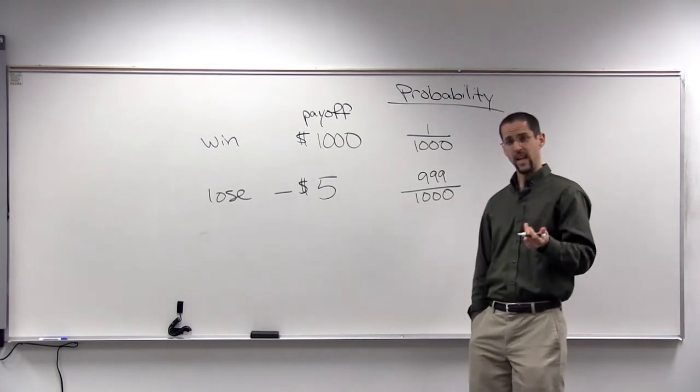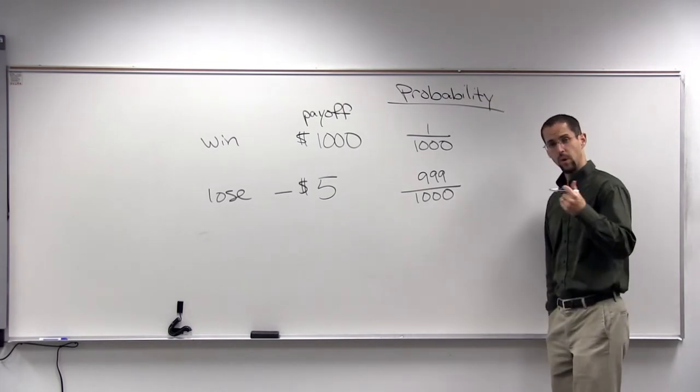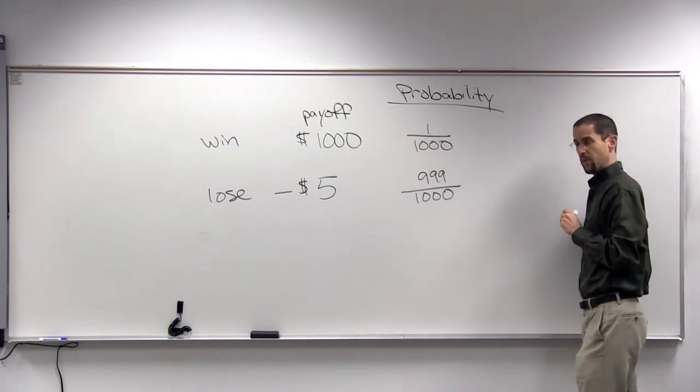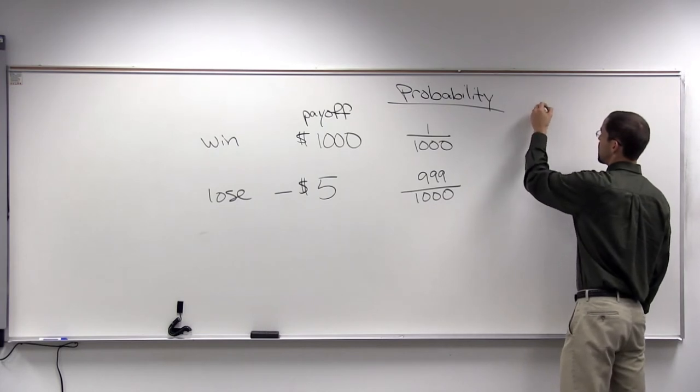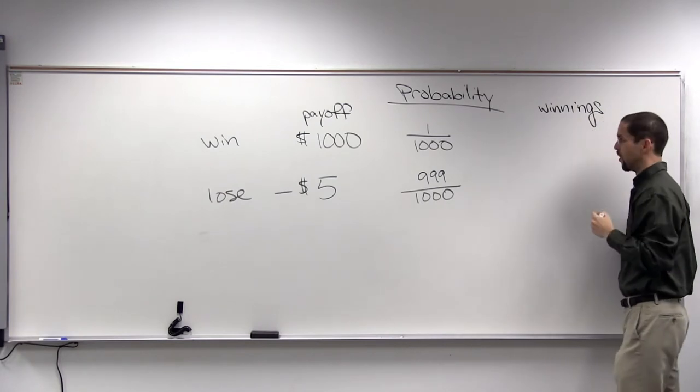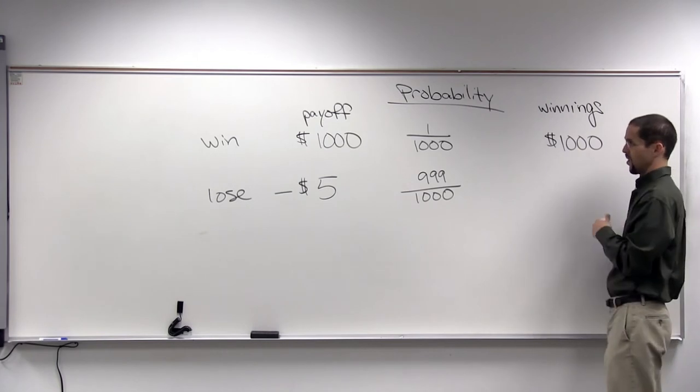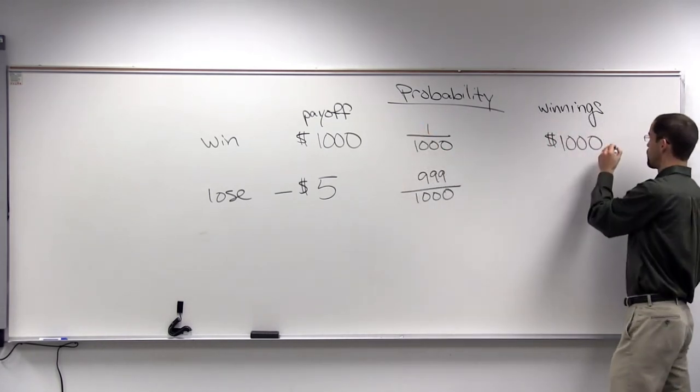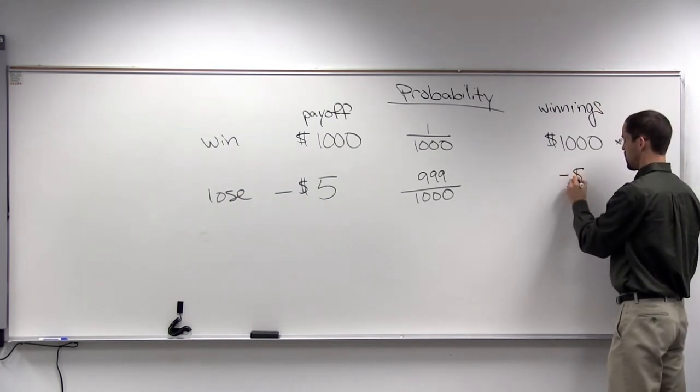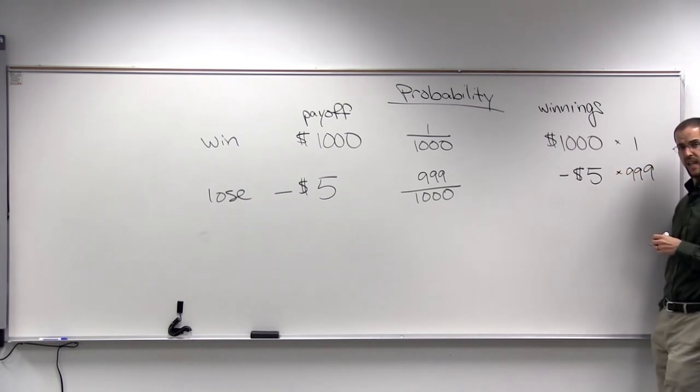Well, let's suppose you played the lottery 1,000 days in a row. You pay your $5. And one time you win. Then you win $1,000. Put your winnings over here. You've won one time. You win $1,000. That's 1,000 times one.